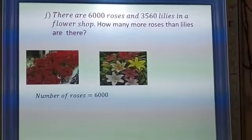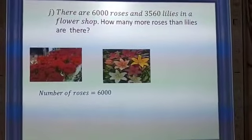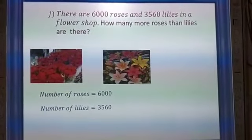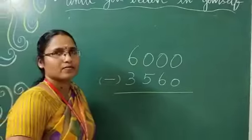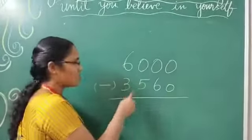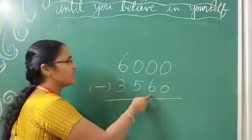Number of roses, 6000. And number of lilies? 3560. Shall we move on? First number 6000. Second number 3560.